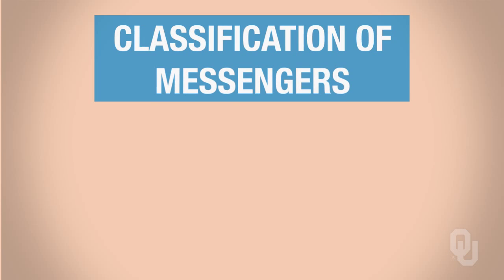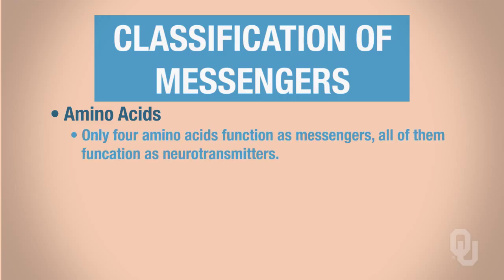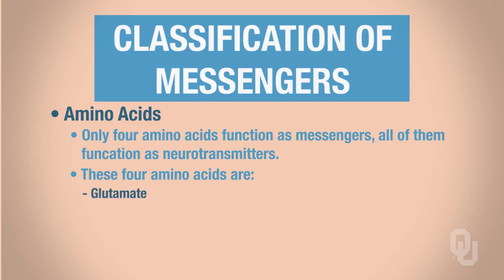We begin with the amino acids. We have only four amino acids that are going to be functioning as messengers, and all of these will function as neurotransmitters. Neurotransmitters are a type of functional classification — a ligand that gets synthesized and secreted from a presynaptic neuron and then travels through the interstitial fluid to bind to receptors on the postsynaptic cell. The four amino acids that function as neurotransmitters are glutamate, aspartate, glycine, and GABA.